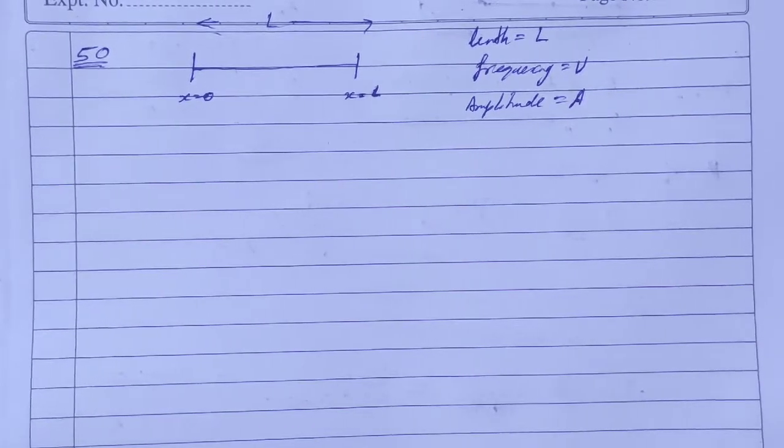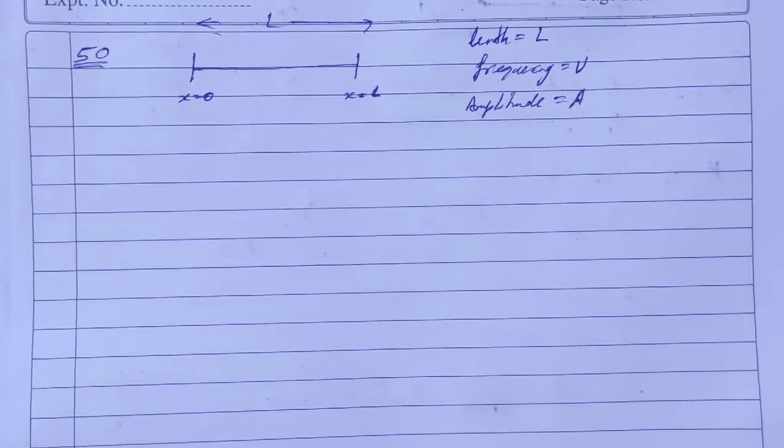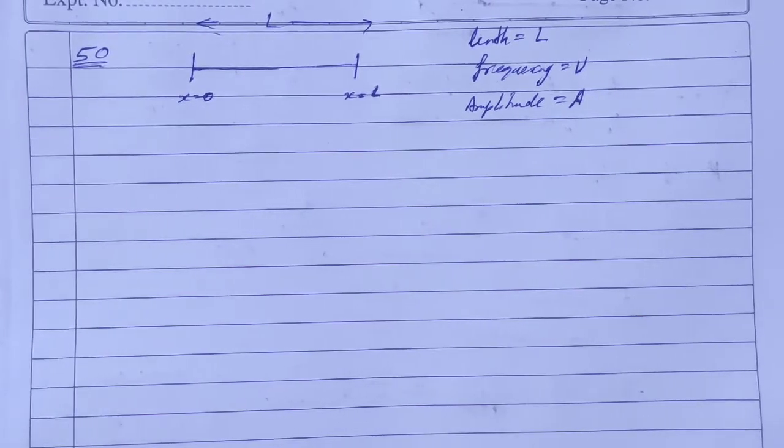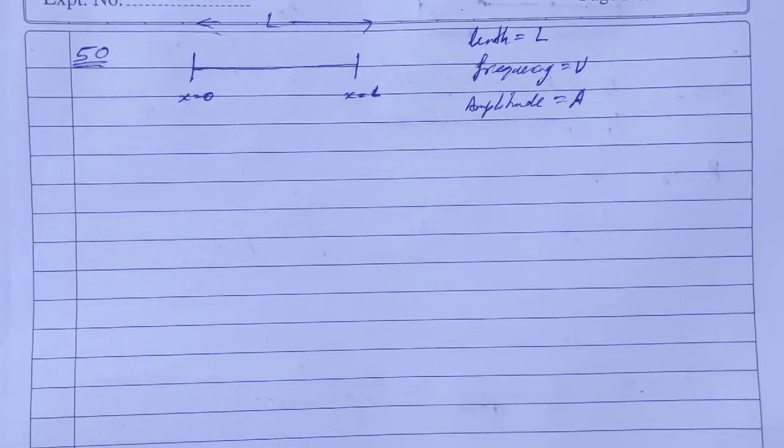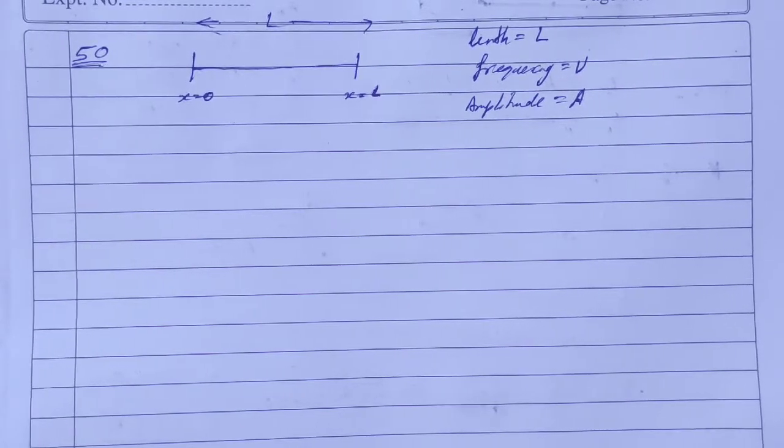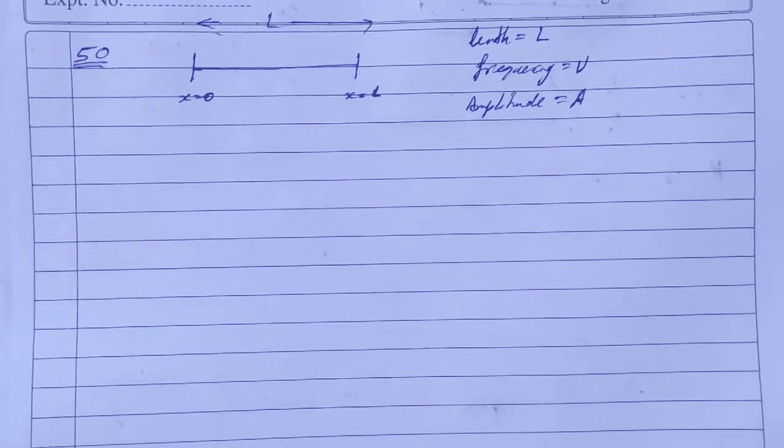Second, take the origin at one end of the string and x-axis along the string. Take y-axis along the direction of displacement. Take t equal to 0 at the instant when the middle point of the string passes through its mean position and it's going toward the positive y-direction. Write the equation describing the standing wave.